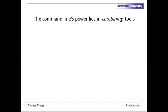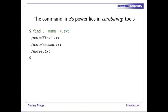As we said in previous episodes, the command line's power lies in combining tools. We've seen how to do that with pipes. Here's how to combine find with 'wc -l' to count the lines in all those files. The trick here is to put the find command inside back quotes. This tells the shell to run find and then replace what's in the back quotes with the command's output.